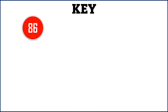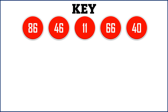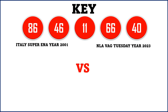Let's move on with our studies. The key number is 86, 46, 11, 66, and 40, which we are researching. We take two different systems: the Italian Super Enalotto from the year 2001 versus the NLA back from 2023 to current 2024. We take events from Super Enalotto and also from the NLA lotto system — a very unique, simple winning strategy using a very strong key comparing these two systems.